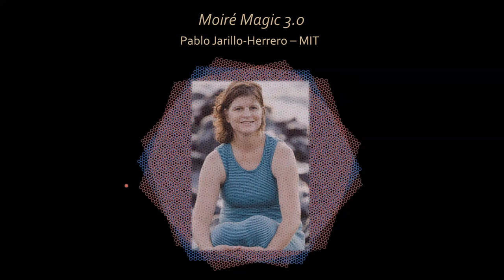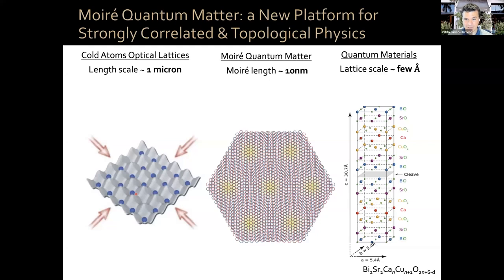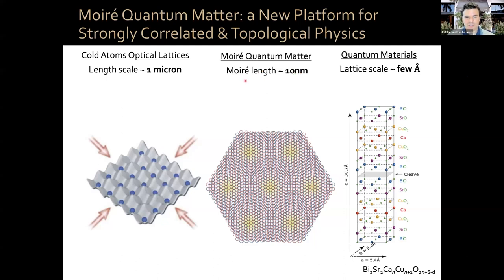I want to tell you about how Moiré quantum matter has become a new platform for strongly correlated and topological physics. This platform is complementary to two others: actual quantum materials with lattice scales of a few Angstroms, and cold atoms in optical lattices with a length scale of about a micron. Moiré quantum matter, with an intermediate length scale of order 10 nanometers, forms a very complementary platform to these other two, and can help us understand the behavior of strongly correlated topological quantum matter.